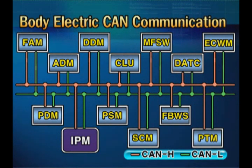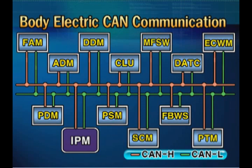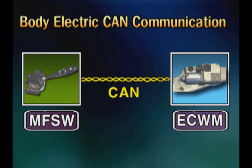In the body communication of Genesis, 13 modules at the maximum use low-speed CAN communication according to the option. Genesis differs from the conventional communication system in that the multifunction switch and the electric control wiper module use CAN communication.